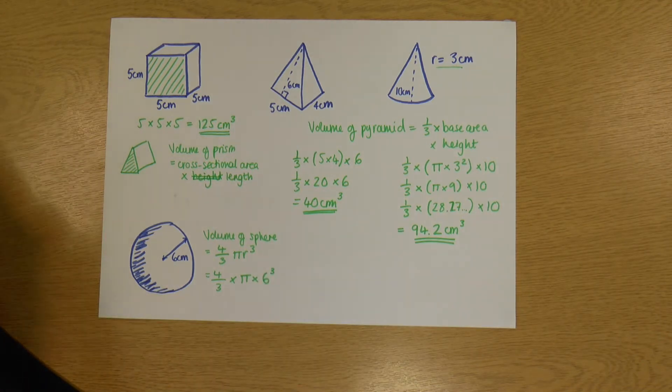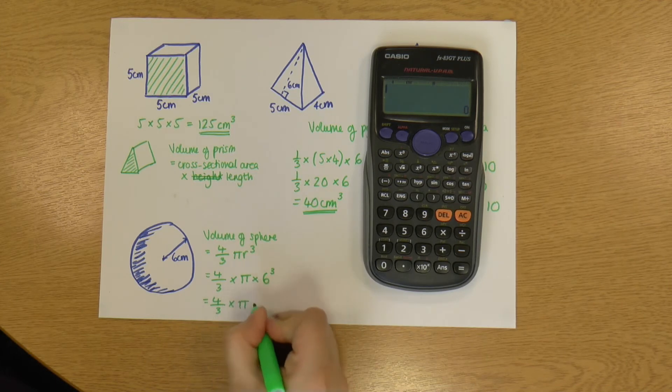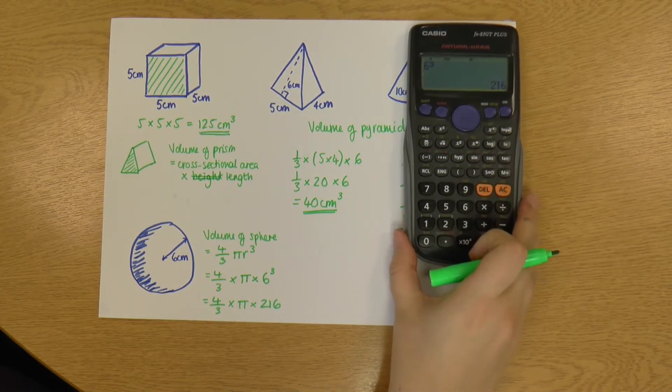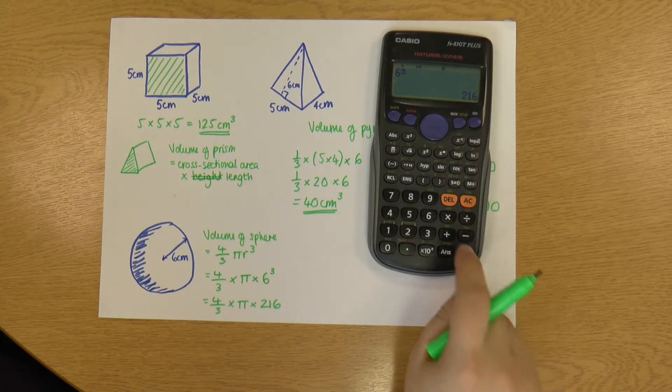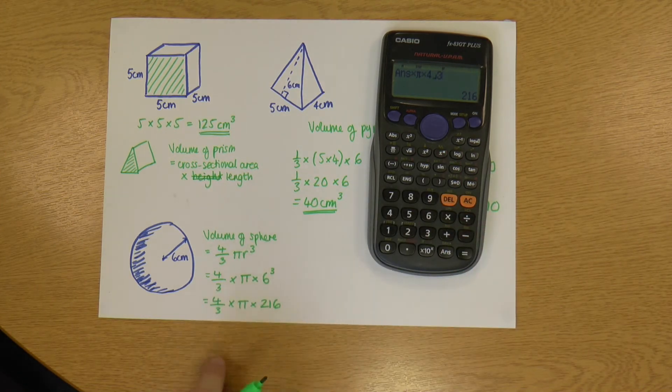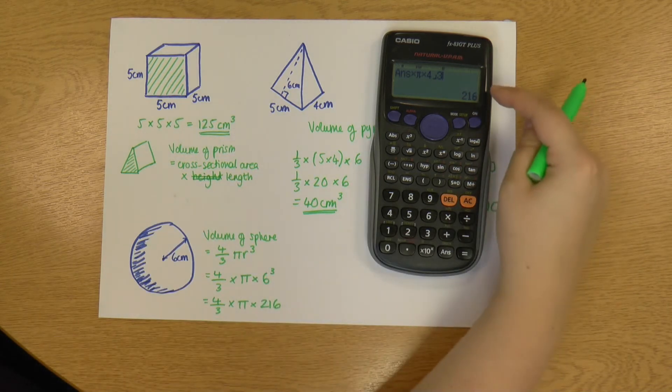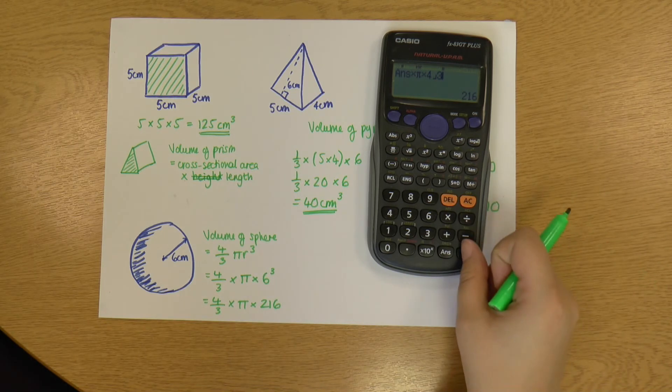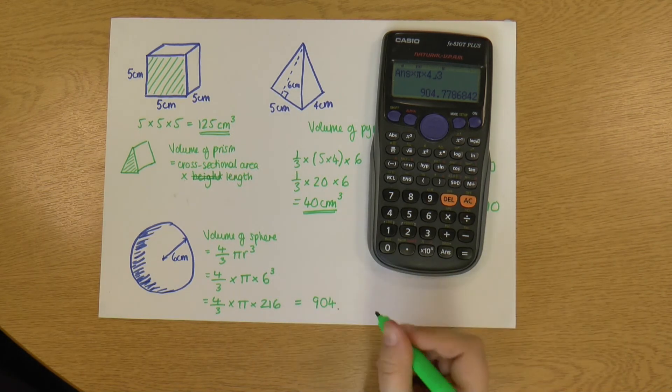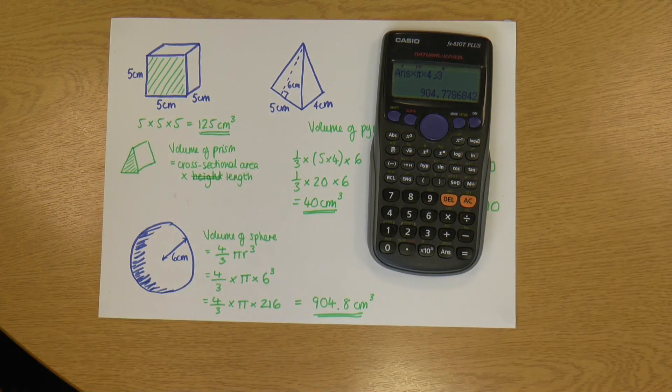And I'm going to grab my calculator again. So I'm going to do my 6 cubed first. So I've got 4/3 times pi times 6 cubed. So 6 cubed is 216. And I can then pop that into the calculator. So 216 times pi times 4/3. And remember when we're multiplying, it doesn't matter what order you put things in. So saying 4/3 times pi times 216 is exactly the same as saying 216 times pi times 4/3. Okay. And I'm going to press equals. And that gives me, and again, I'm going to round this to one decimal place. So 904.8 centimeters cubed. And that is my volume of a sphere.